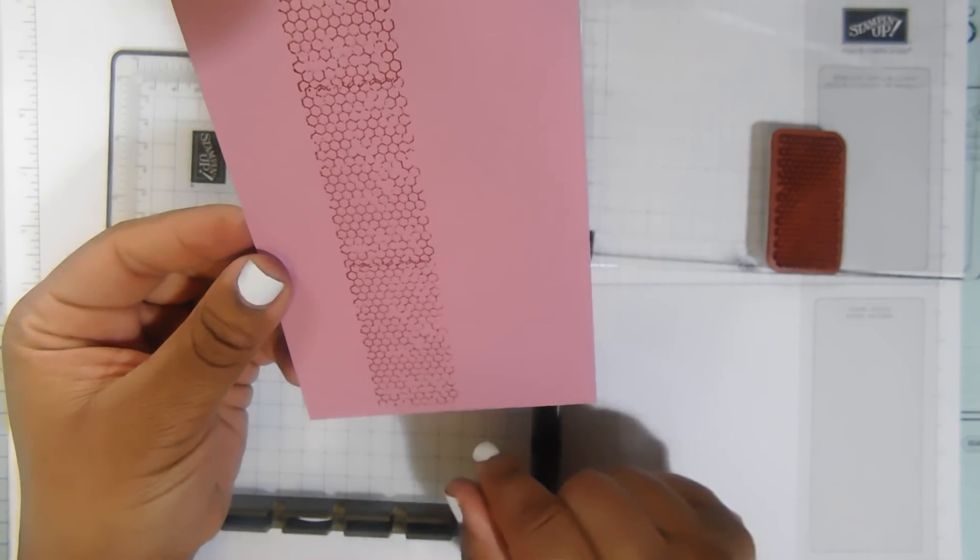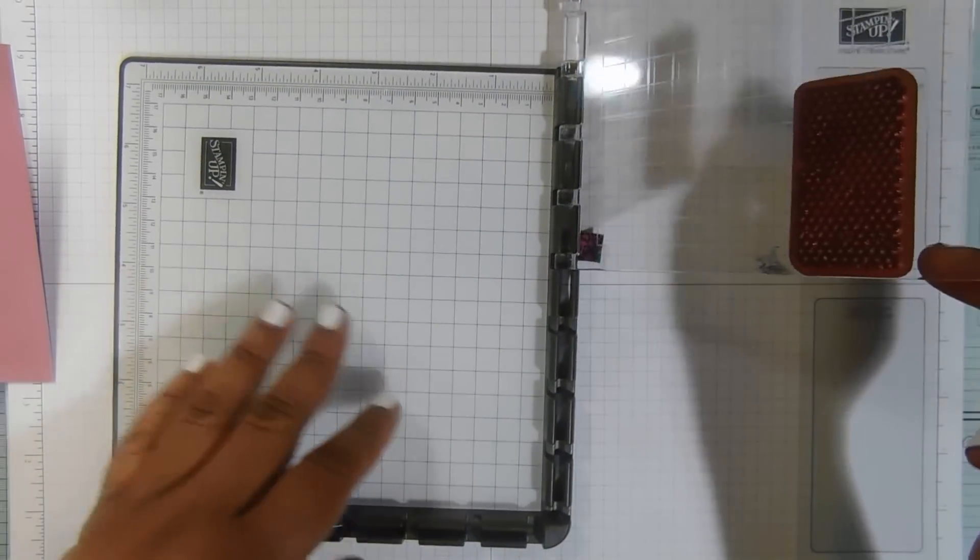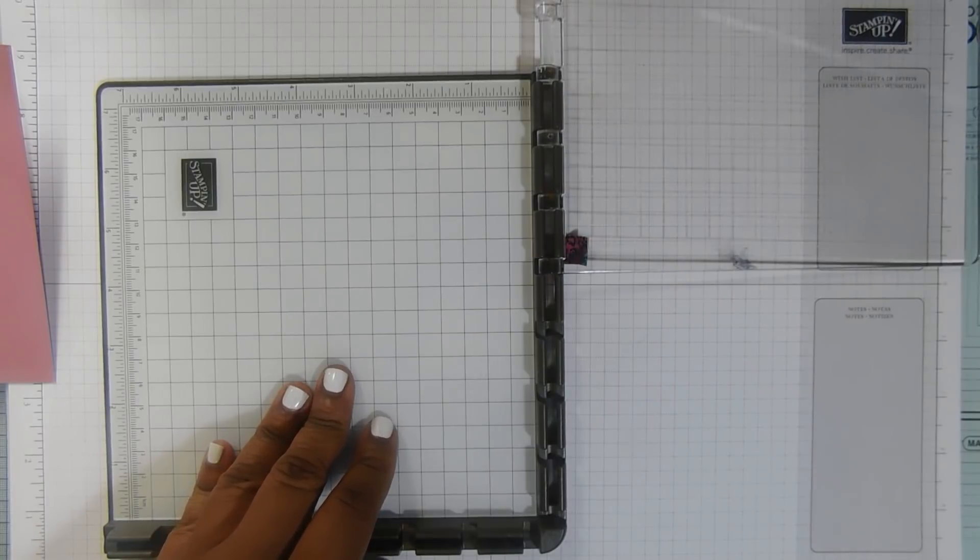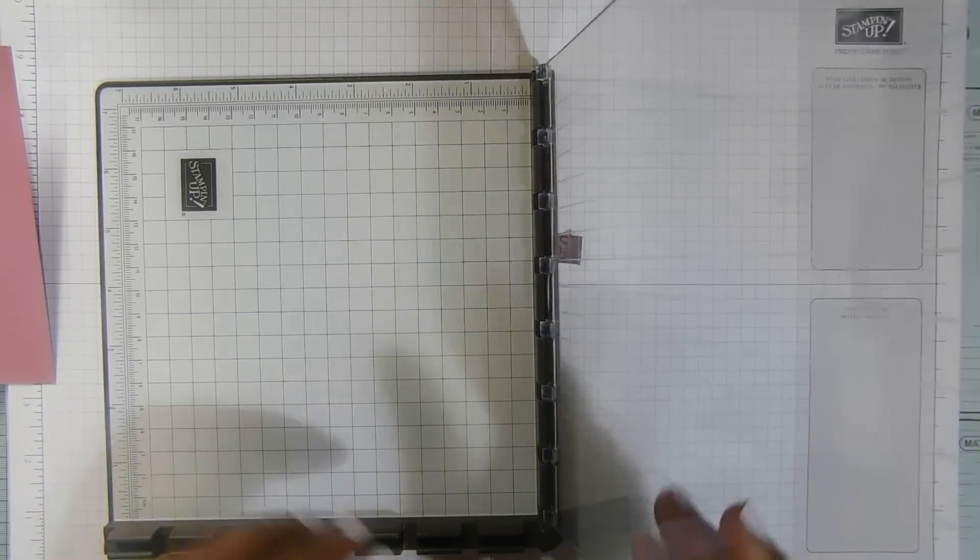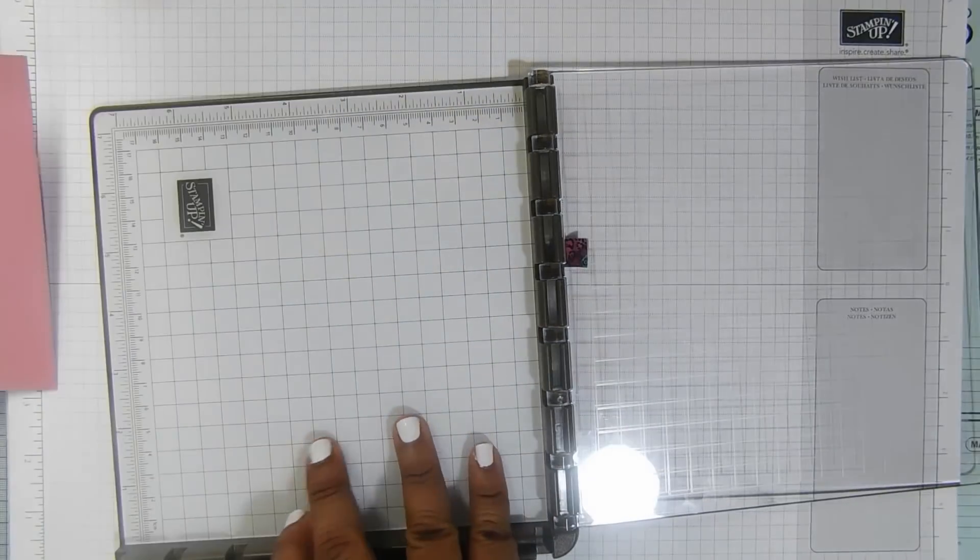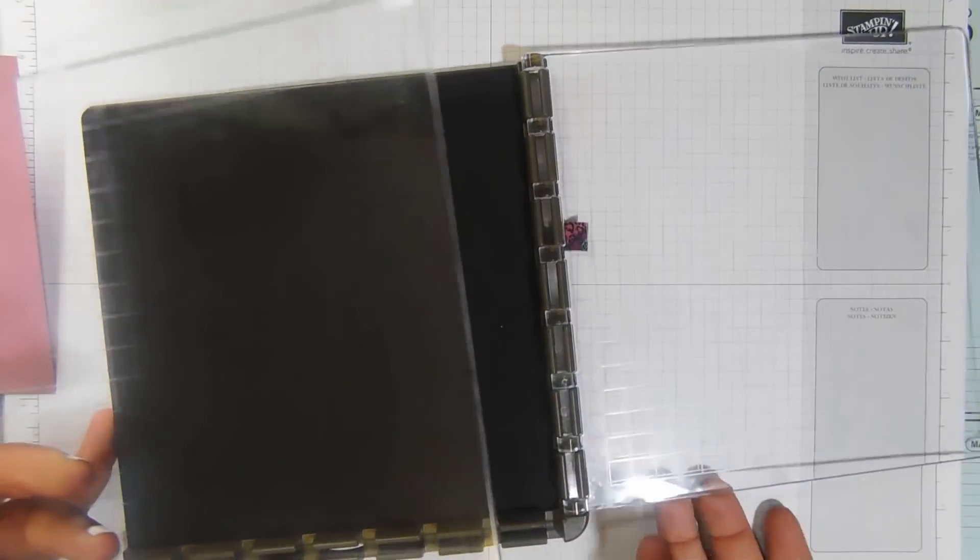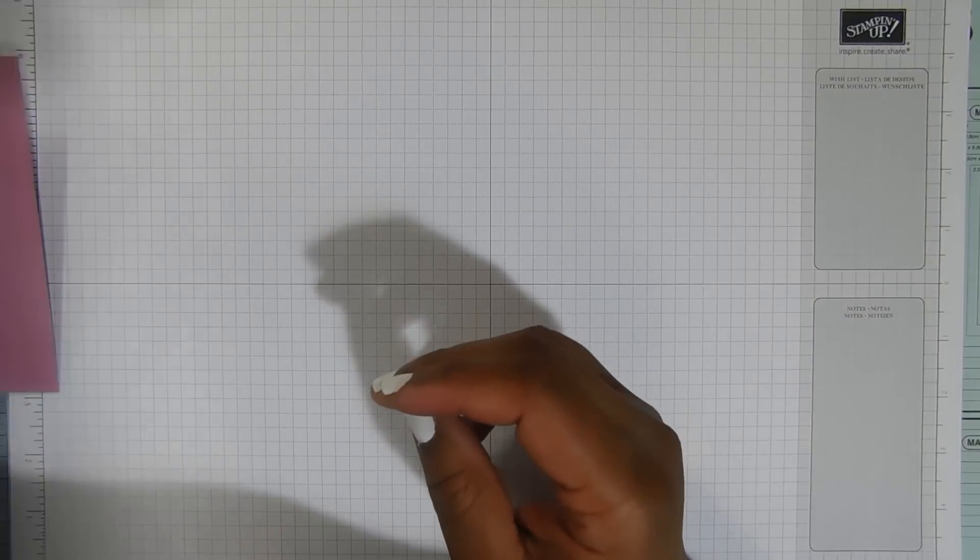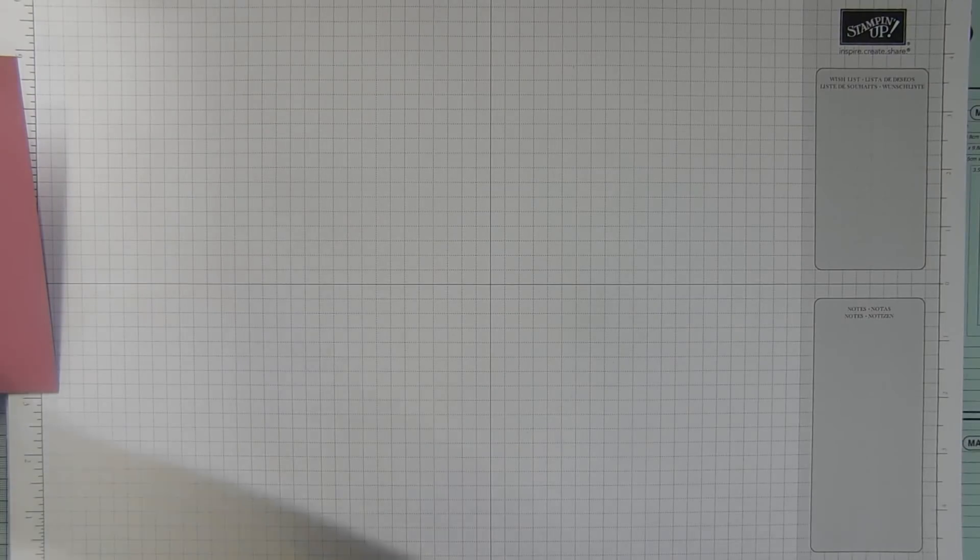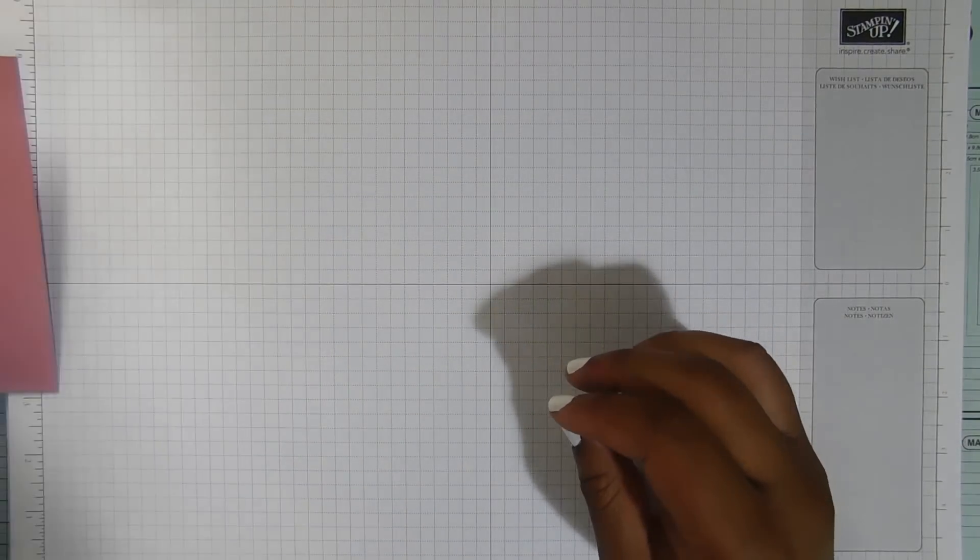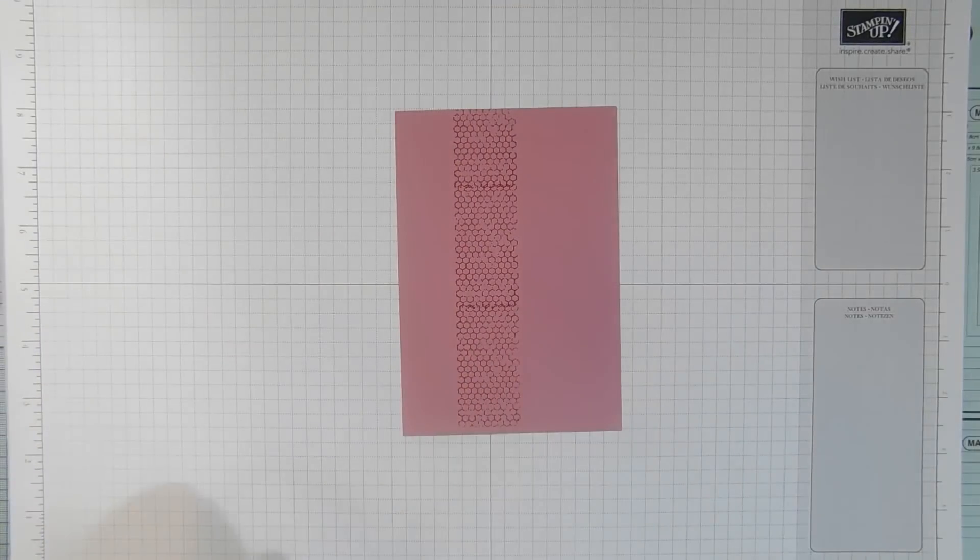So that worked perfectly. Could really do with another bit there, but it's alright. I'm not that fussed. So let's pop this back. Magnet goes underneath. And we'll just move all that out of the way. I've just got it stored in a box over there.